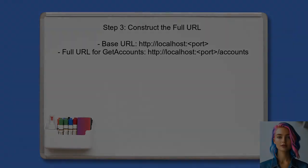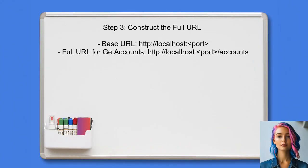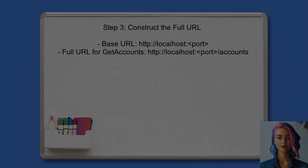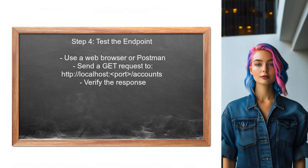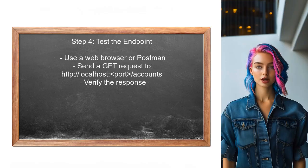This information can typically be found in the local cluster configuration or service logs. Once the user has the endpoint name and port number, they can construct the full URL for the get accounts request. The URL format will be based on the service's base address. Finally, the user can test the constructed URL using a web browser or a tool like Postman to ensure that the get accounts method is triggered correctly.